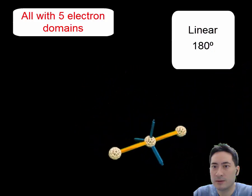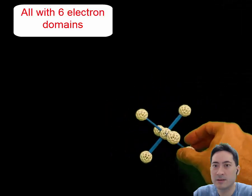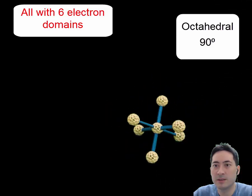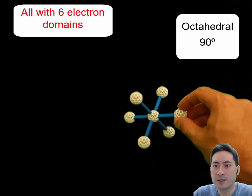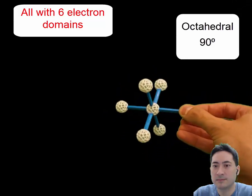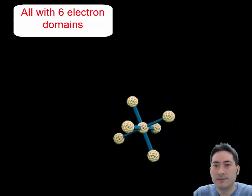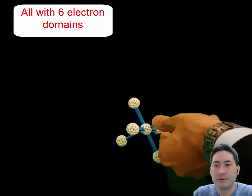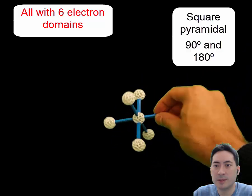Alright, moving on to even larger sizes. You can fit six electron domains around it, so that gives you an octahedral shape. Again, you must memorize all the angles as well. And remove one of those, you get a square pyramidal.